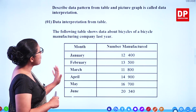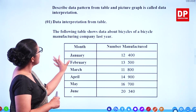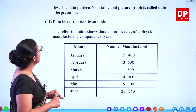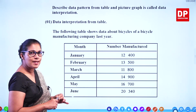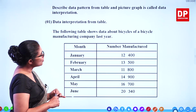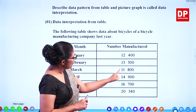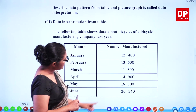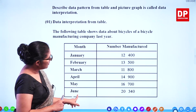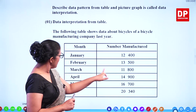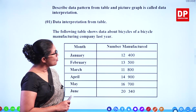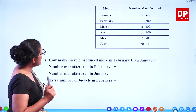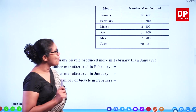So, data interpretation from a table. Look at this table — you have months and number manufactured. This is about bicycles of a bicycle manufacturing company last year. When you look at the table, you can see this is the highest and March is the lowest. So you can interpret data from the table. How many bicycles are produced more in February than January?